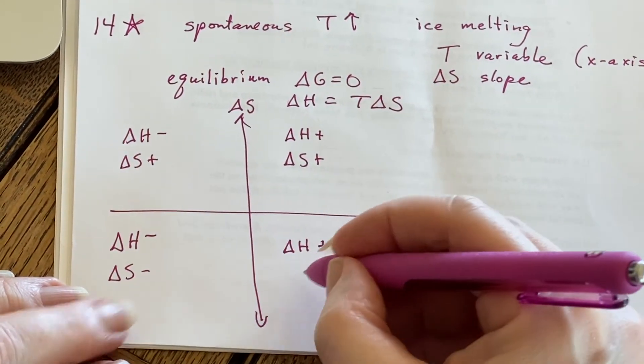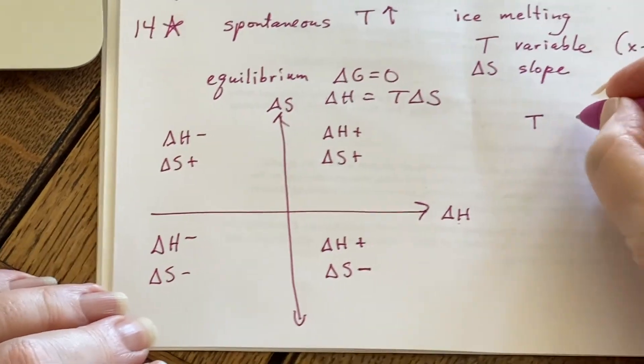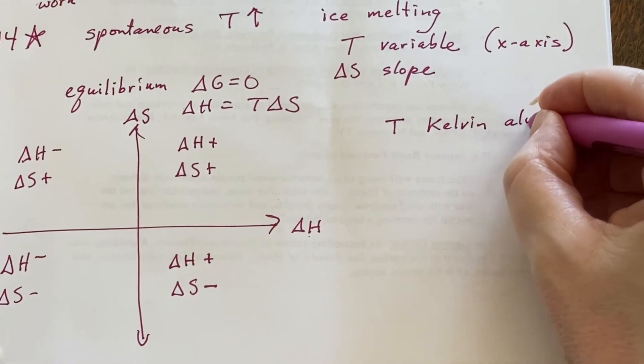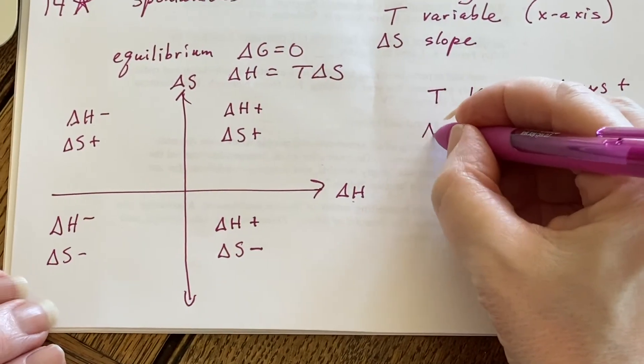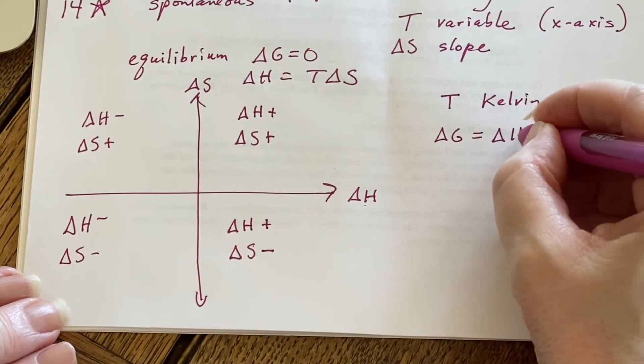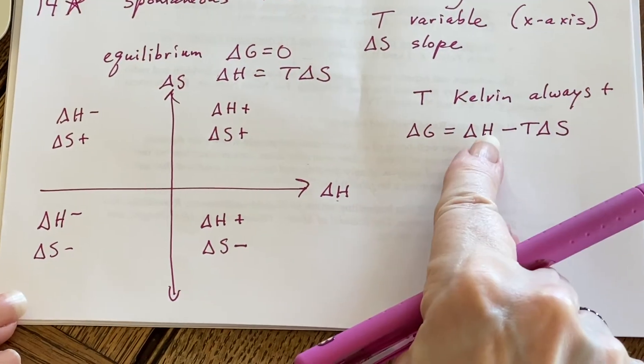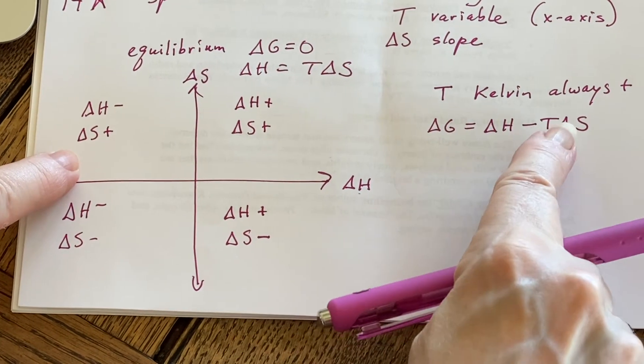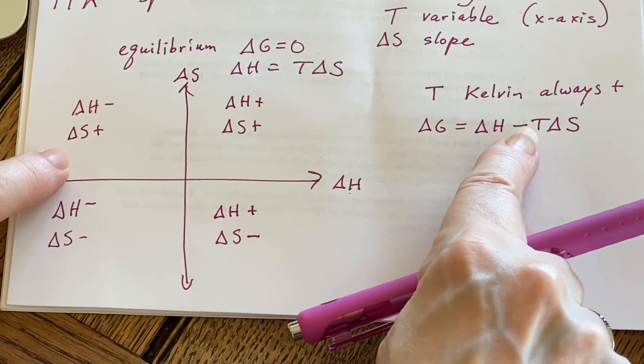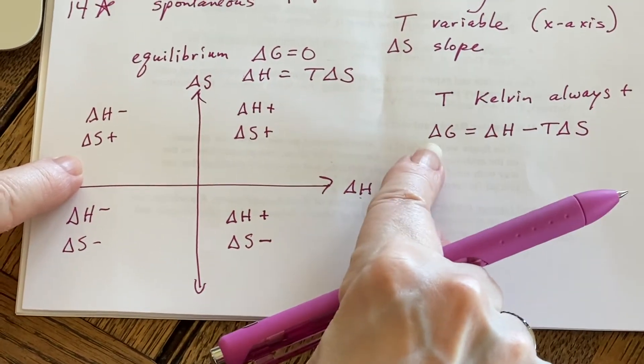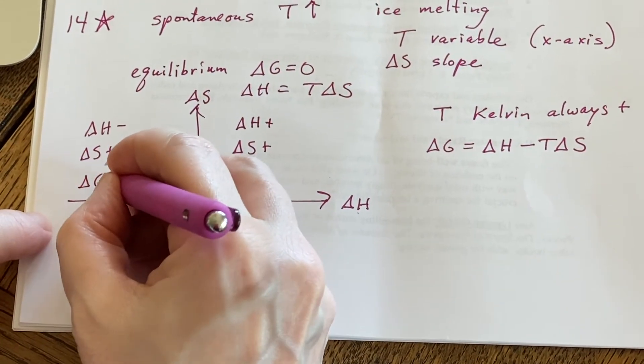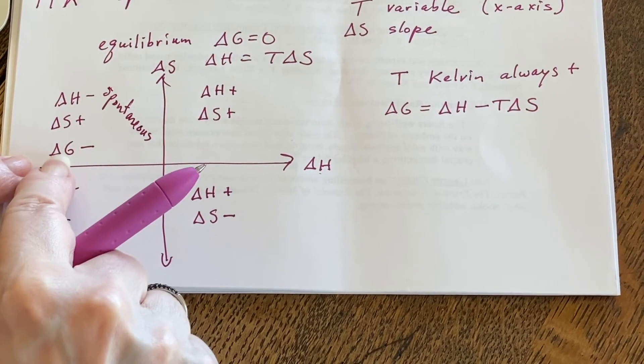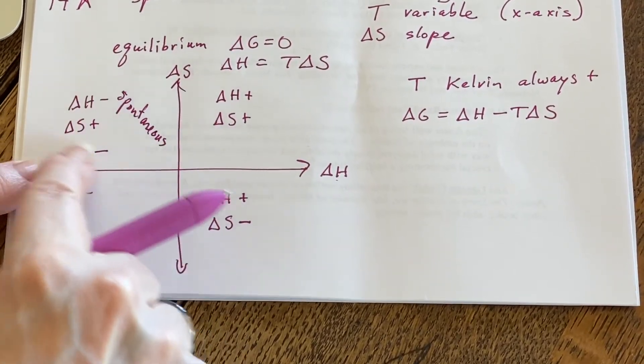T, because it's in Kelvin, can only be a positive number. So it's always positive. So then when I start thinking about delta G being a combination of delta H minus T delta S, I can see that if I was to do this one, delta H being negative, delta S is positive, but here's a negative sign here. That would always end up with a negative number. This will result with delta G always being negative and everything is spontaneous here. I always get delta G is negative and it does not matter what the temperature is.